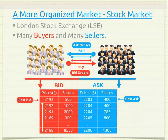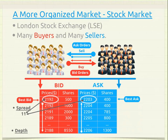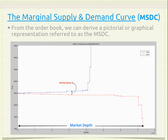On the bid side, prices are in decreasing order with the highest bid price at the top. On the ask side, prices are in increasing order with the lowest (best) price at the top. From these two prices we can infer the spread — the spread dimension of the order book — which is the difference between the ask and the bid, in this case about $11. We can also infer the depth of the market from the order book, showing the volume with respect to price accumulated in the book.